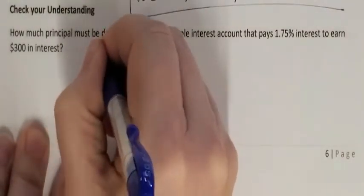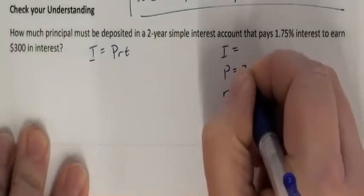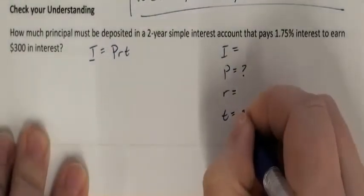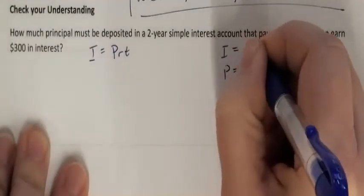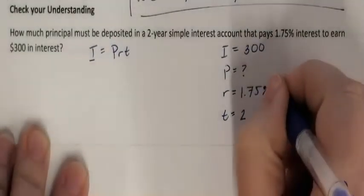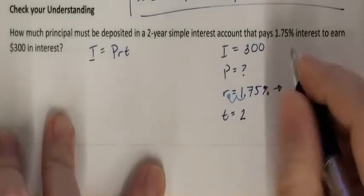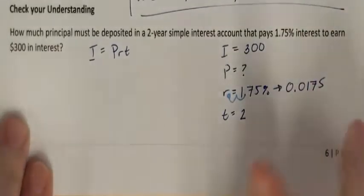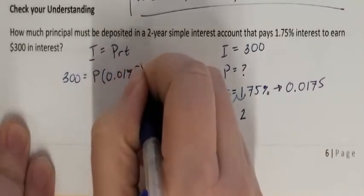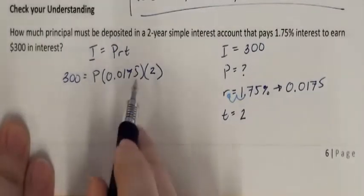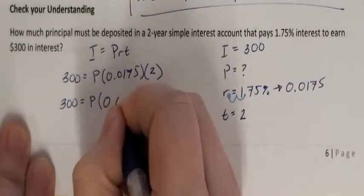Let's check your understanding. How much principal? I'm still using the simple interest equation with I, P, R, and T — but it's asking for principal, so I don't know P. I have 2 years at a 1.75% rate to earn $300 of interest. My rate needs to be converted to a decimal by moving 2 places left, giving 0.0175. So I equals 300, and T is 2.